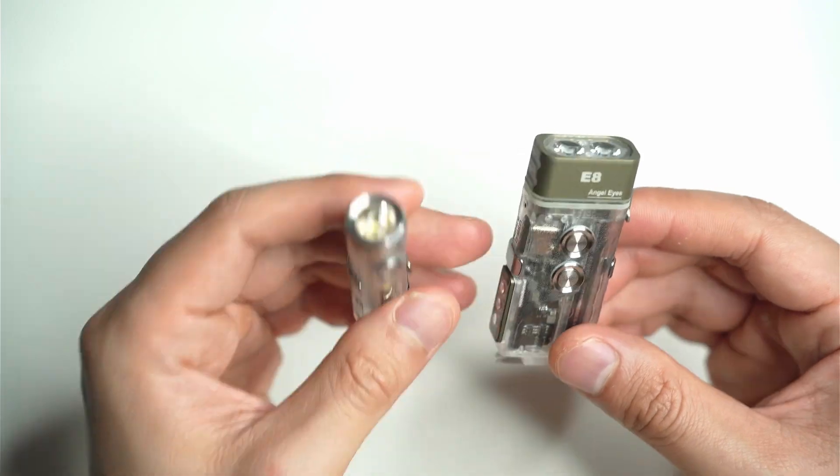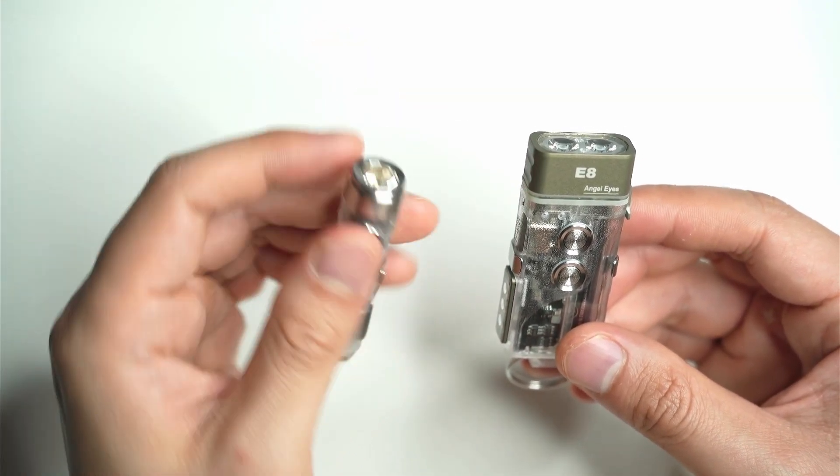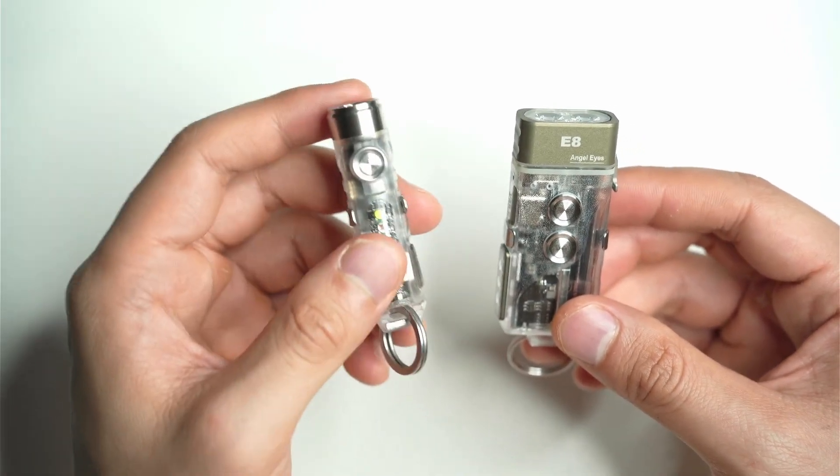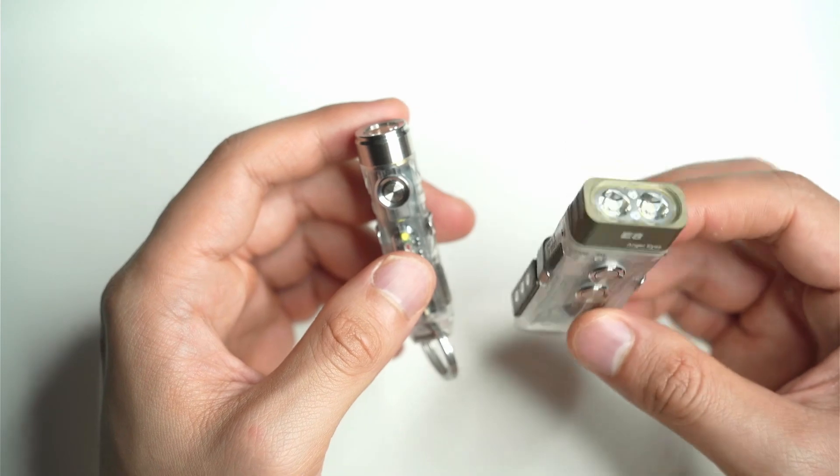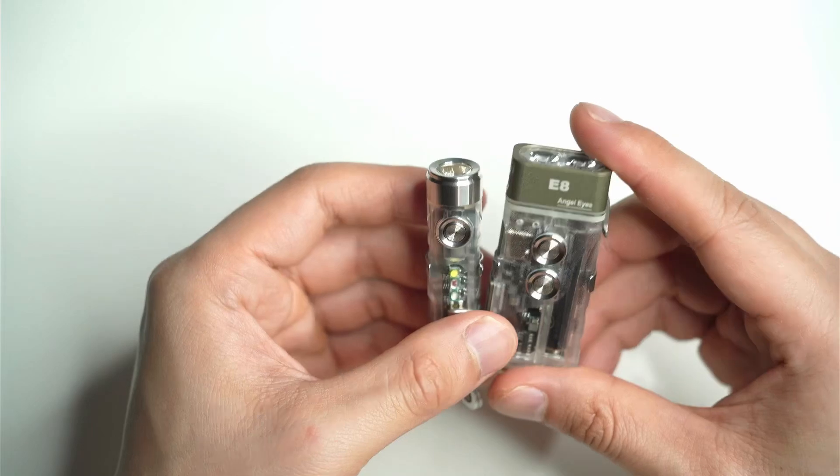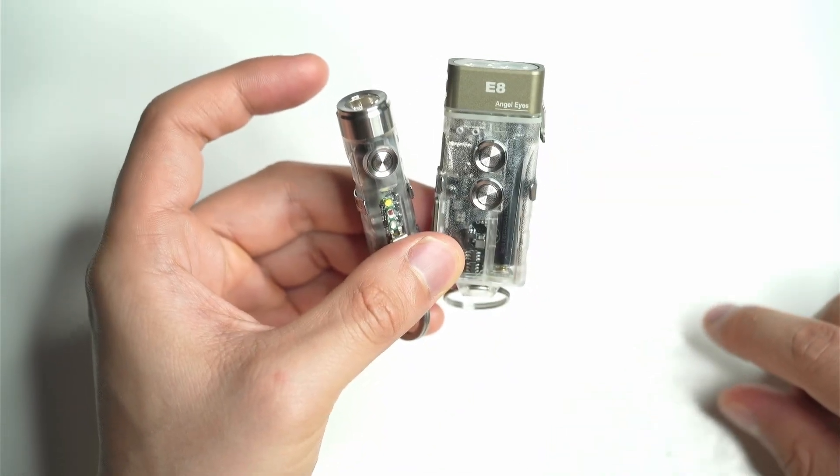But again, the A8 is just super light and you're able to just use this more as a traditional keychain light. It's almost pushing it there, I mean it looks like a remote control or something like that for your garage door. So anyway, let's have a look at how these both perform in the beam shots.